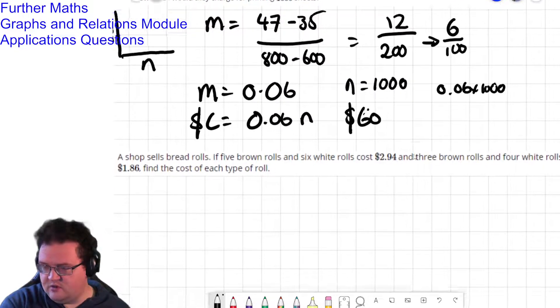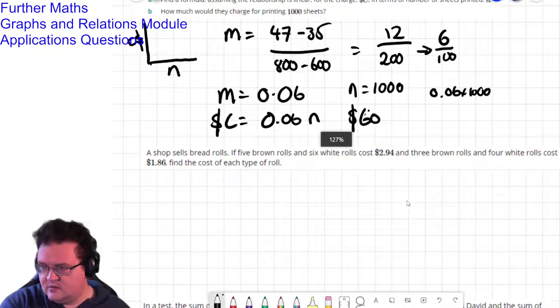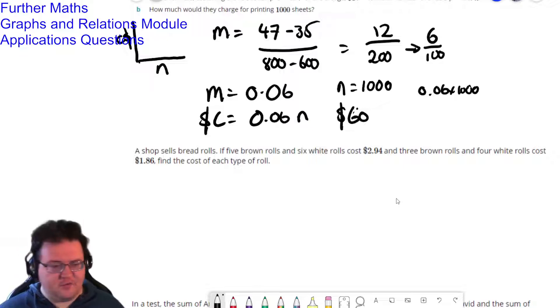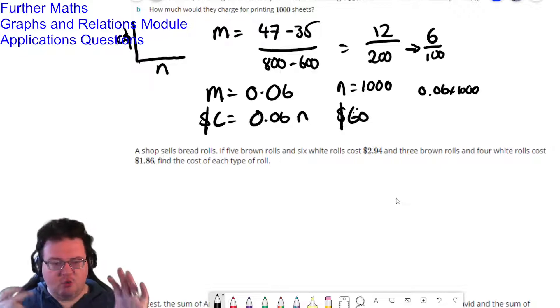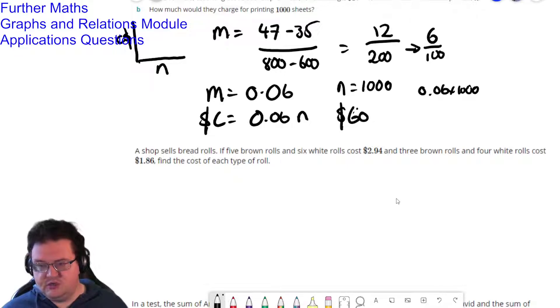A shop sells bread rolls. Five brown rolls and six white rolls costs $2.94. And three brown rolls and four white rolls cost $1.86. Find the cost of each type of roll. So this is what is called a simultaneous equation problem. Because I have two things I don't know. I don't know how much one brown roll costs. I don't know how much one white roll costs. So I need to set up two simultaneous equations, and then I'm going to use my CAS, because everything can be done on the CAS, to solve it.